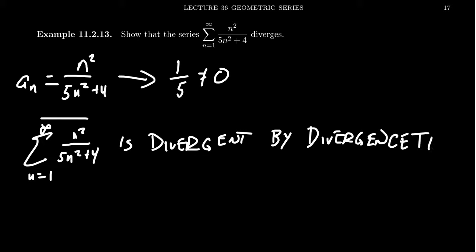As we show that series are convergent or divergent, it's not just good enough to state the conclusion — we have to also describe why. There are going to be convergence tests that tell us whether it converges or not. By the divergence test, we see that this series diverges because the limit of the sequence doesn't go to 0.